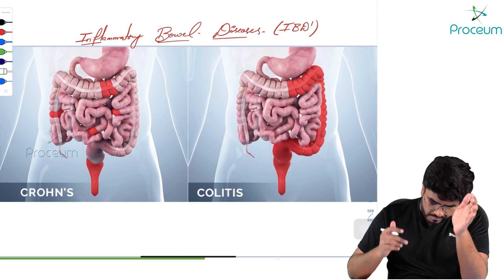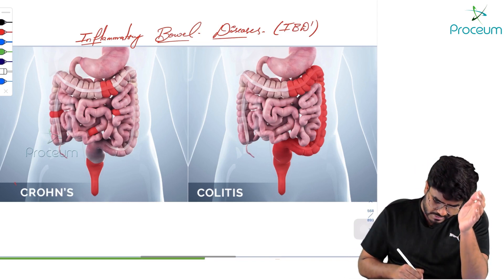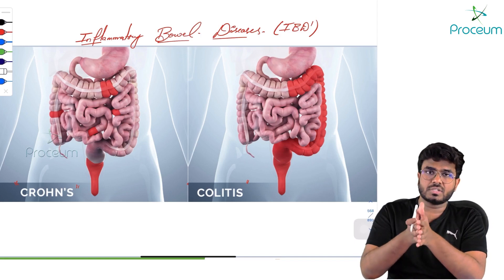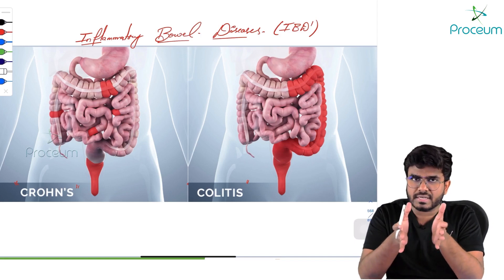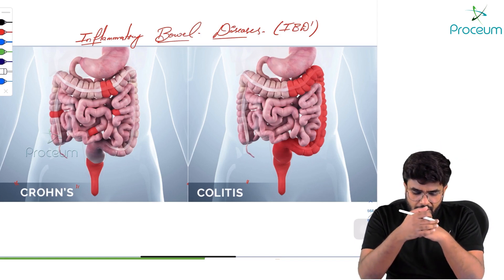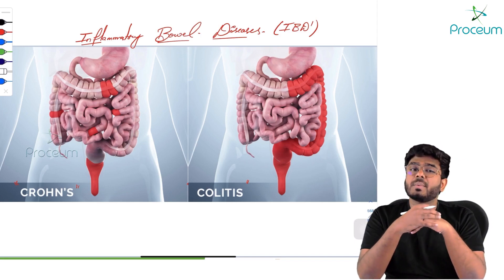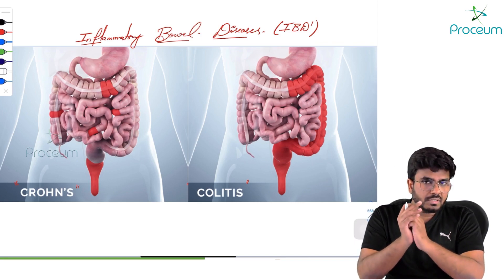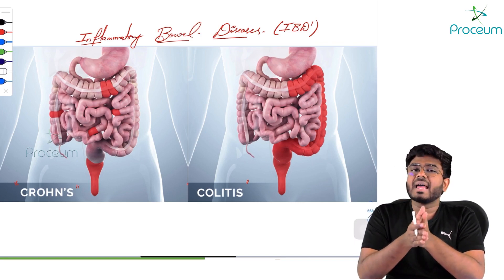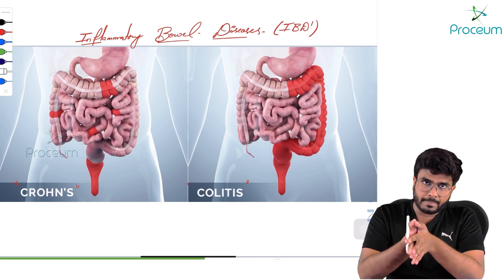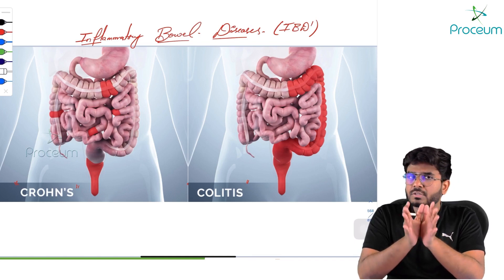The two main inflammatory bowel diseases are Crohn's disease and ulcerative colitis. Even in these inflammatory bowel diseases, there is malabsorption. Why exactly are these inflammatory bowel diseases happening?